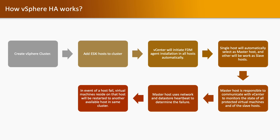The master host uses network and datastore heartbeats to determine failures. In the event of a host failure, virtual machines residing on that particular ESXi host will be migrated to another ESXi host. This is how vSphere HA works.